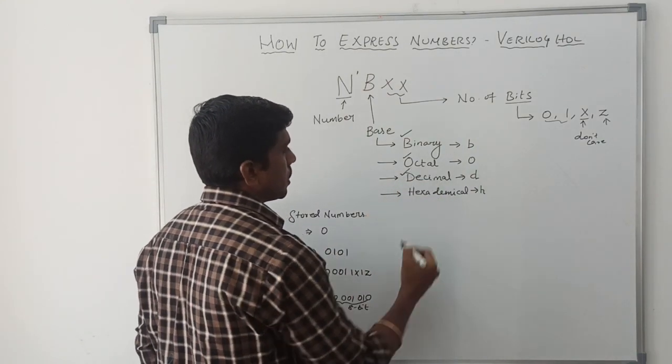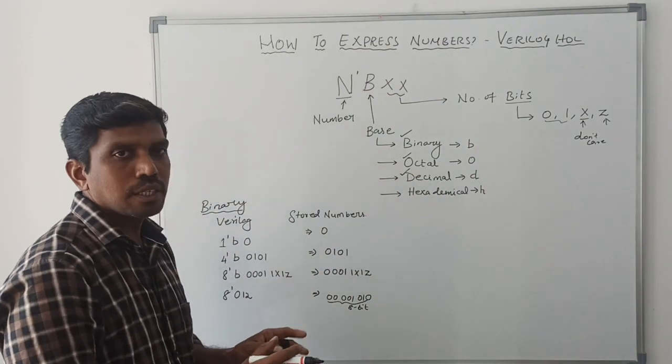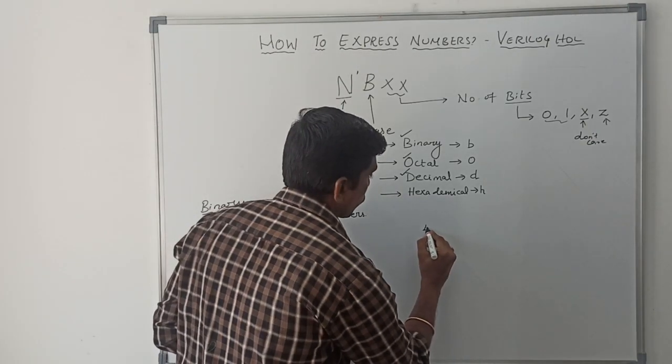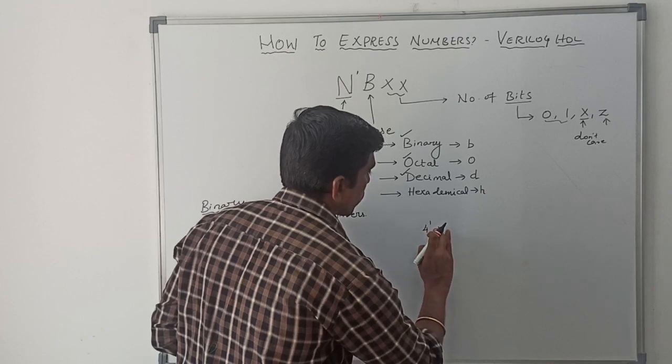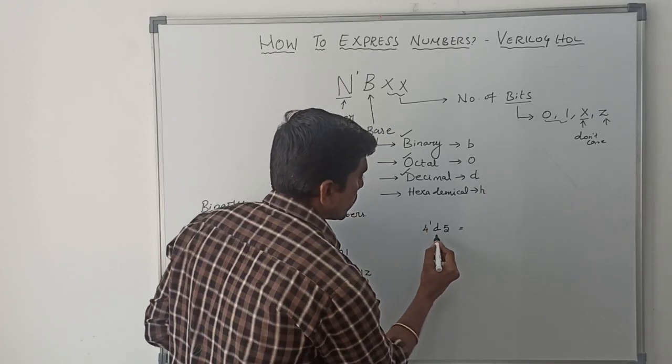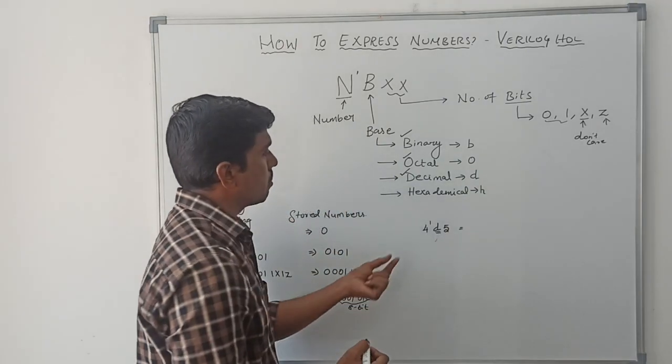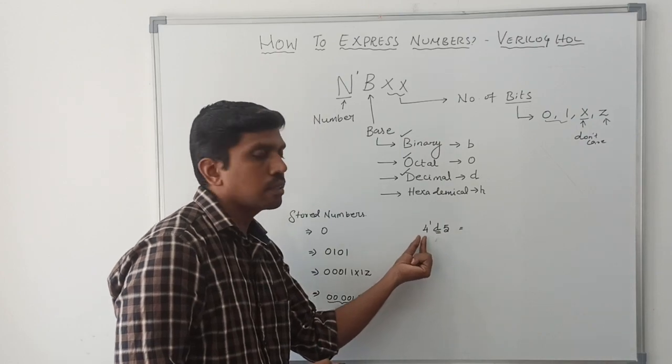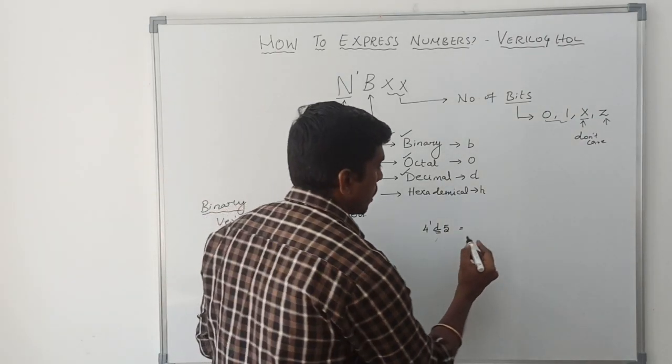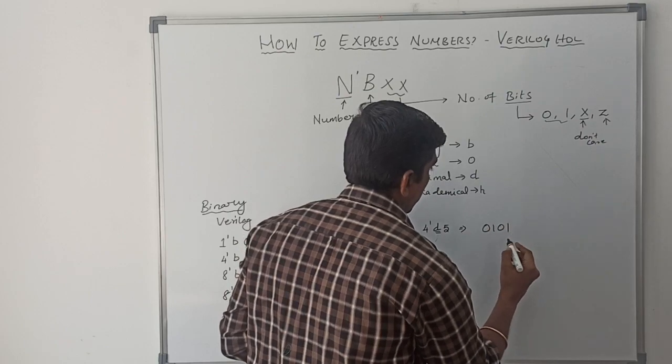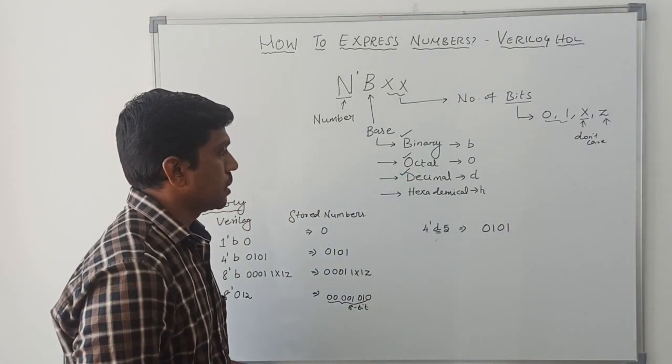Then, we go to decimal. How to express the decimal number system in Verilog code. 4 tick D 5. This D represents decimal number. This 4 represents 4 bit values. This 5 is represented in 4 bit values. Stored number 0101. It's a decimal representation.